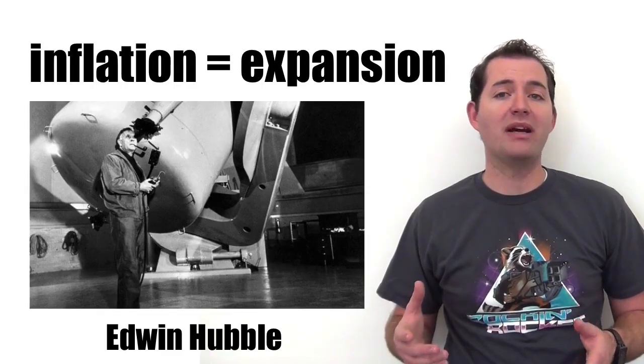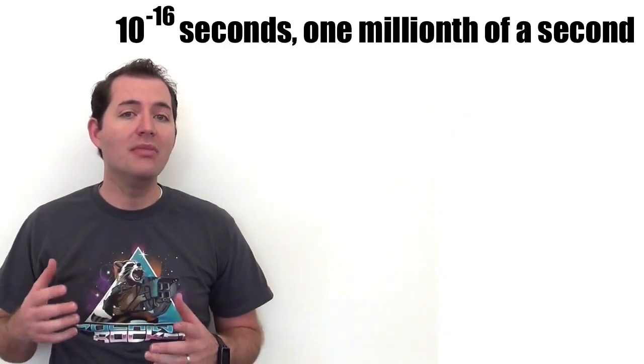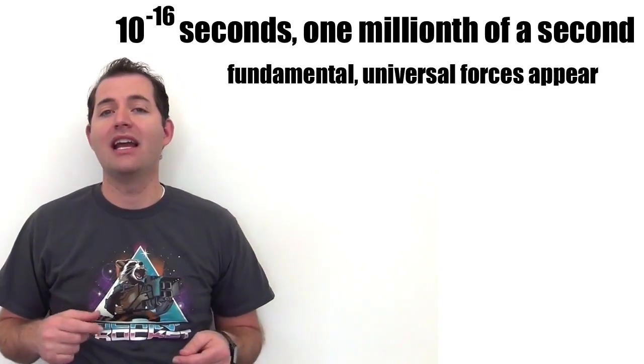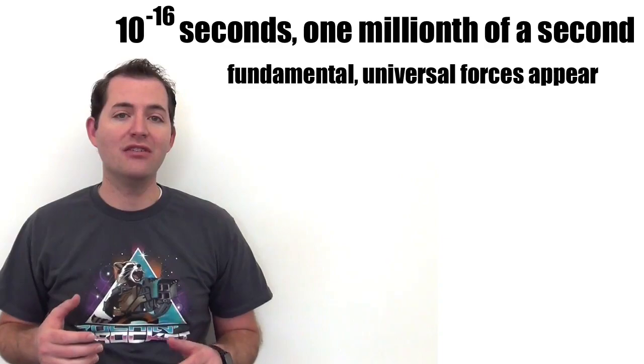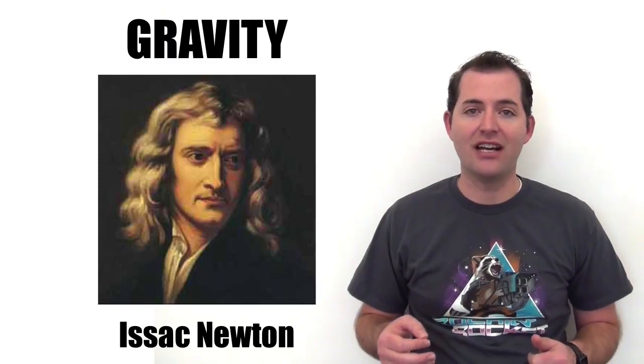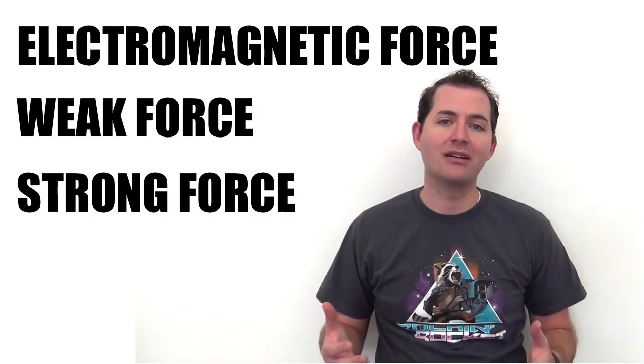It was actually discovered by Edwin Hubble in 1929. At 10 to the negative 6 seconds, or one millionth of a second, this expansion began to slow a bit. And the fundamental forces of the universe began to appear. First there was gravity, which was first explained by Isaac Newton in 1665, and then all of the other fundamental forces: the strong force, the weak force, and the electromagnetic force began to appear.